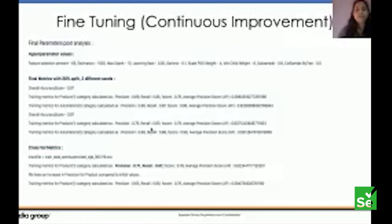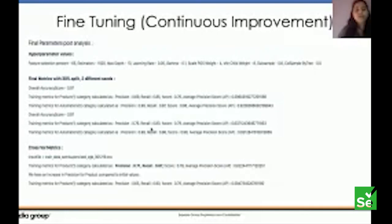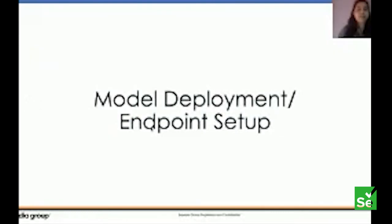This is a continuous process since we are feeding more and more data and new error patterns keep arising as new applications are developed. These parameters are prone to change for improvement as well. Our final metrics with a 70/30 train-test split gave an accuracy of 97%, which was very promising and good enough for production. Our next step is to deploy the model and set up an endpoint so everyone can use it. My colleague Anuradha will take up this part.